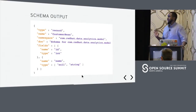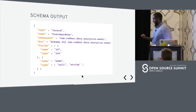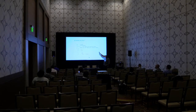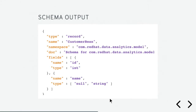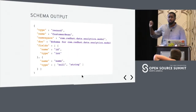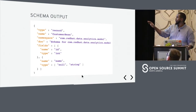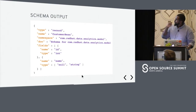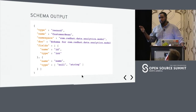This is what a schema looks like in Avro. You have the type, which is record; you give it a name, a namespace, and you can write documentation in there, which is really helpful. Anybody who looks at this schema will know what it's about. There are fields, and under name, when you put null/string or null/int, that means the field is optional — you can choose to provide that field or not.